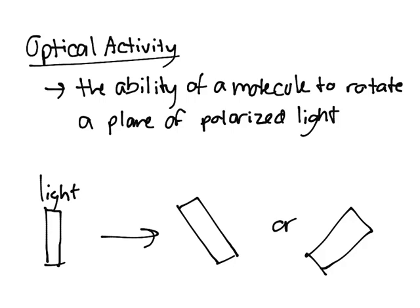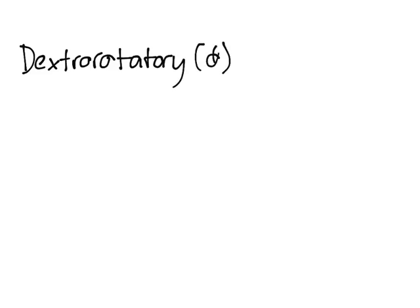Essentially, you could rotate it clockwise or counterclockwise. Molecules that rotate light clockwise are called dextrorotatory. It's a weird-sounding name, but dextrorotatory, also known as D, is designated by a plus sign. These molecules rotate light clockwise.